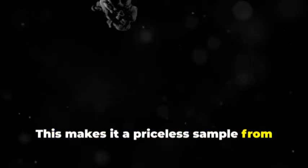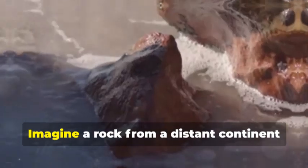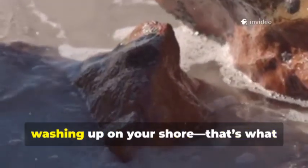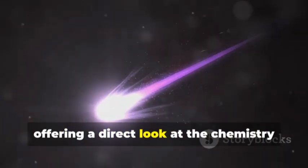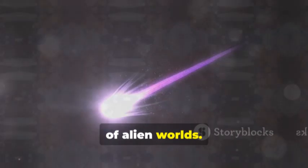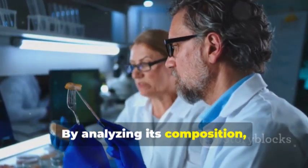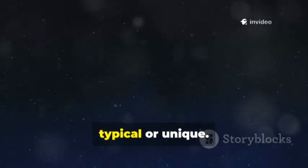This makes it a priceless sample from another planetary system. Imagine a rock from a distant continent washing up on your shore. That's what 3i-Atlas represents. Its materials formed around another star, offering a direct look at the chemistry of alien worlds. By analyzing its composition, we test whether our solar system is typical or unique.